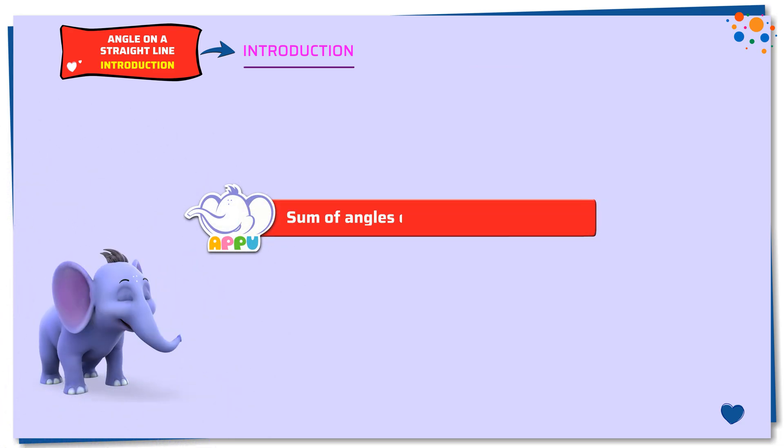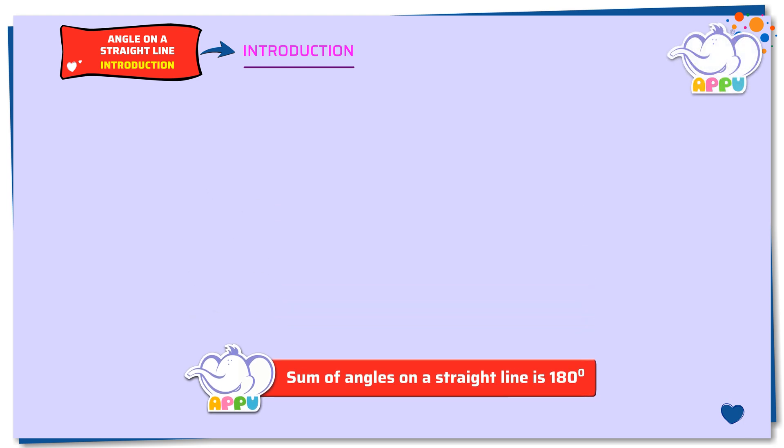The sum of angles on a straight line is always equal to 180 degrees.